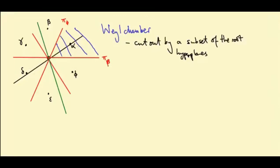So alpha, beta and phi are the positive roots for this particular choice of green line.